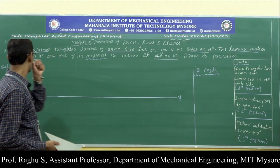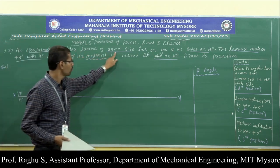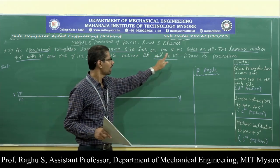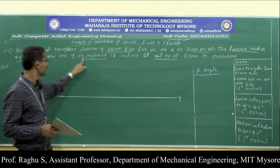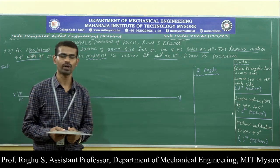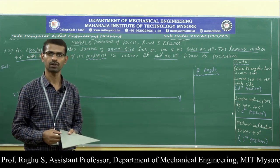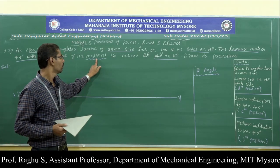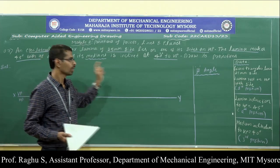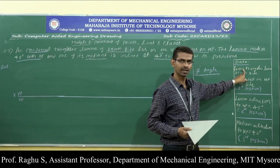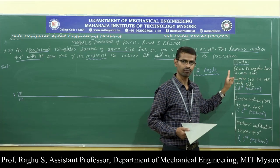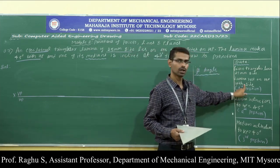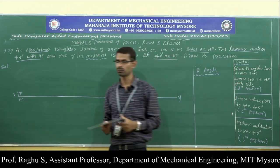The next problem: an equilateral triangular lamina of 25 mm side lies on one of its sides on HP. The lamina makes 45 degrees with HP and the median is inclined at 40 degrees to VP. Draw the projections of the lamina. This is a median inclination problem. The given lamina is a triangle of side 25 mm resting on HP on one of its sides. The resting side is towards the left.